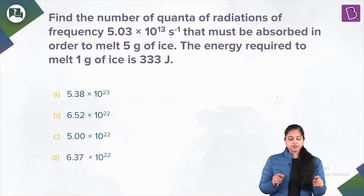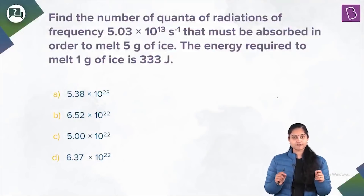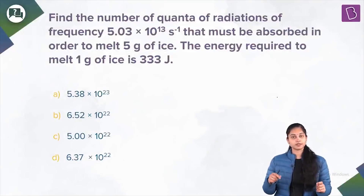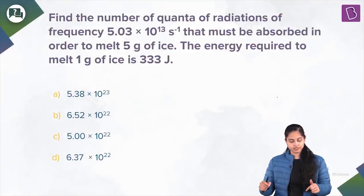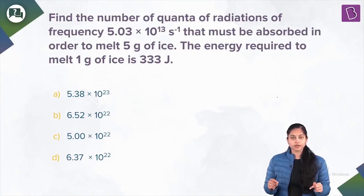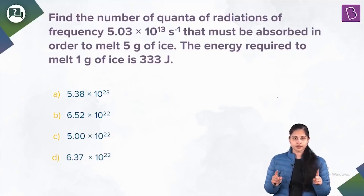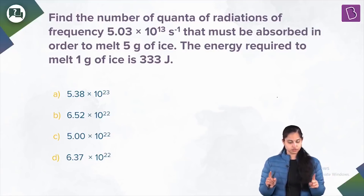The question is: find the number of quanta of radiation of frequency 5.03 × 10¹³ s⁻¹ that must be absorbed in order to melt 5 grams of ice. The energy required to melt 1 gram of ice is 333 joules.